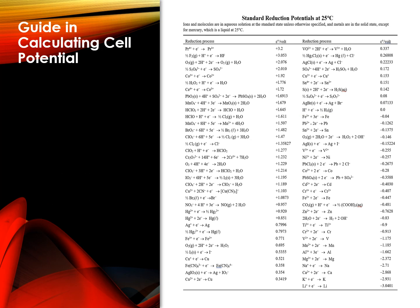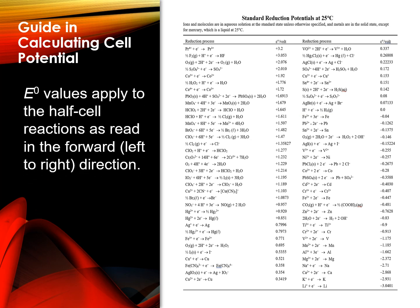FYI, the E superscript zero values apply to the half-cell reactions as read in the forward, left to right direction. Thus, from the table, the half-cell reactions are Cu2+ plus 2e- into Cu solid, and Zn into Zn2+ plus 2e-.